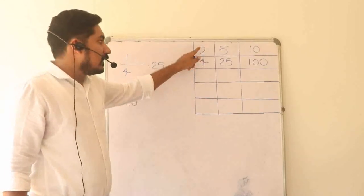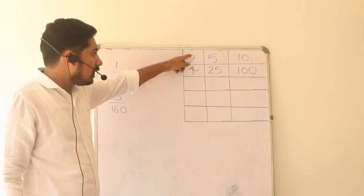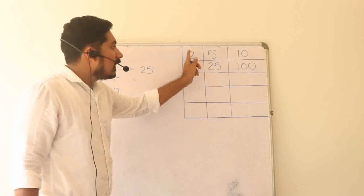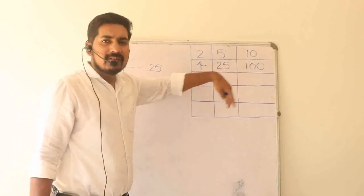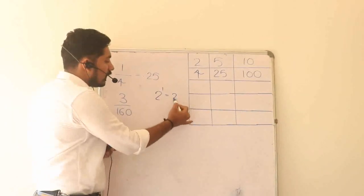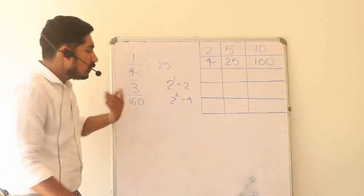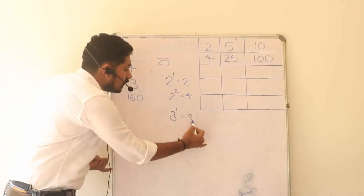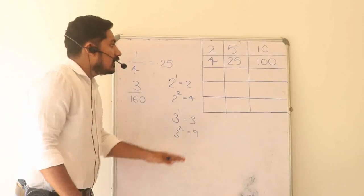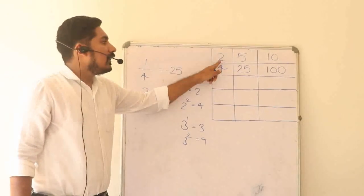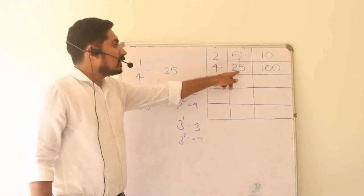If you have two powers — 2 powers and 5 powers — we will look at 2. If you have powers: 2 is equal to 2, 2 is equal to 4. This is the 2 powers. 3 is equal to 3. So this is 3 powers. If we get 2 powers, we get 10. 4 times 20 is equal to 10.